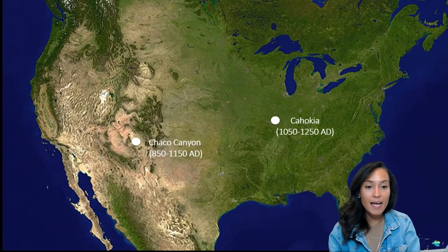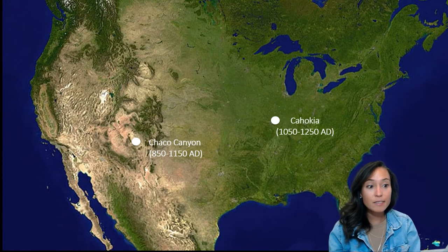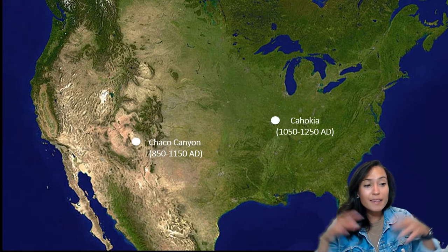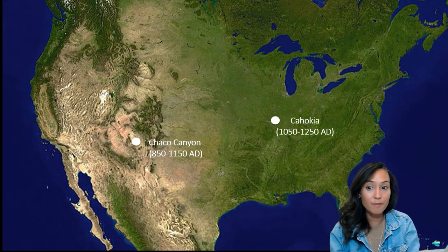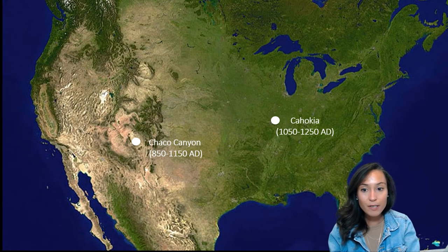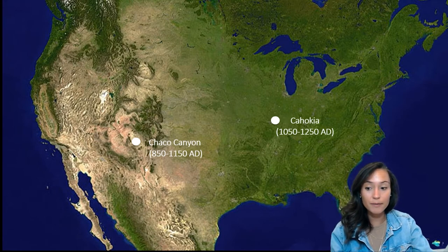For today's class, I want to start in North America and talk about two large city-states located thousands of miles apart and occupied roughly around the same time: Chaco Canyon in New Mexico and Cahokia in Illinois.